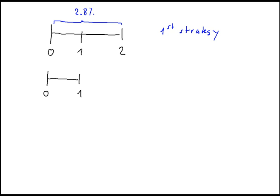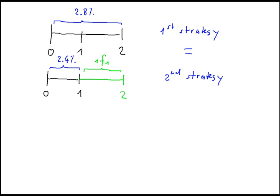In the second strategy, we invest for 6 months using the 6-month spot rate of 2.5%, collect the cash proceeds, and reinvest them at the forward rate starting in 6 months for 6 months — that is the forward rate starting in one semi-annual period for one semi-annual period. Since both strategies cover one year, we expect their outcomes to be equal; otherwise, arbitrage forces in the market will restore equilibrium.